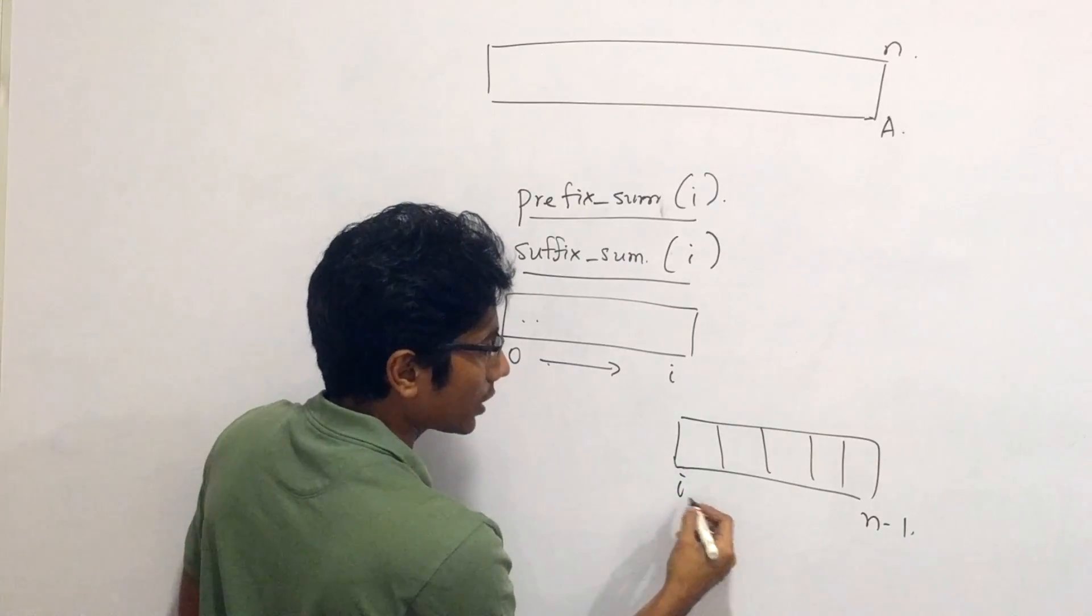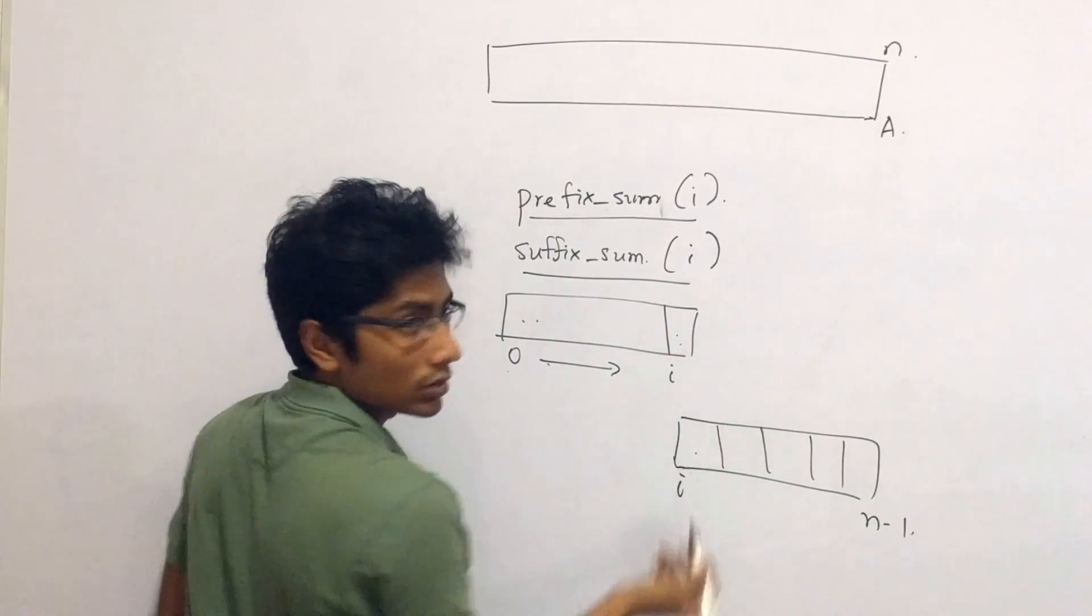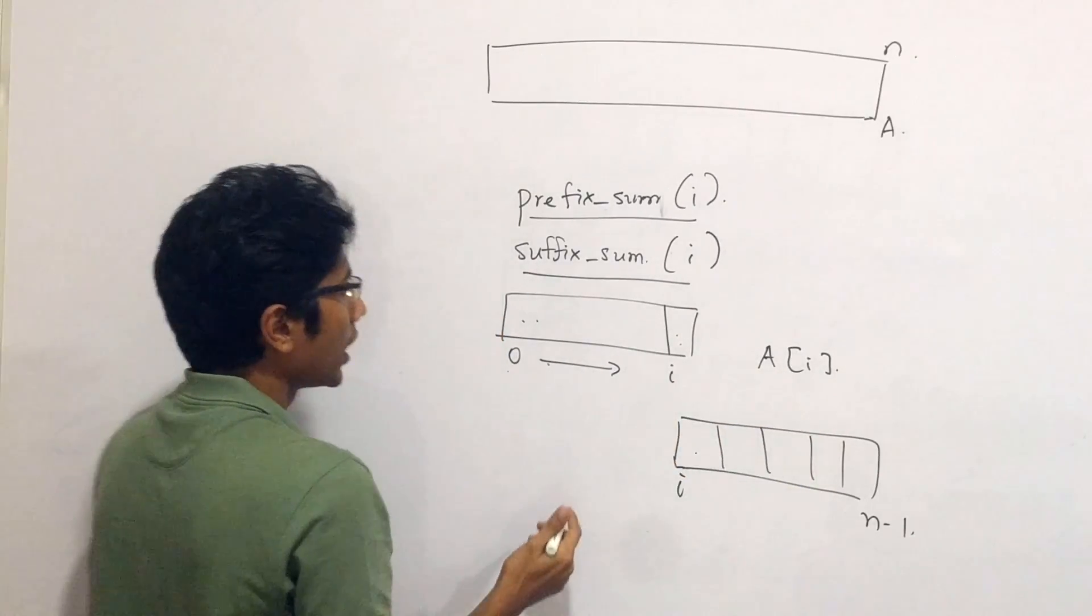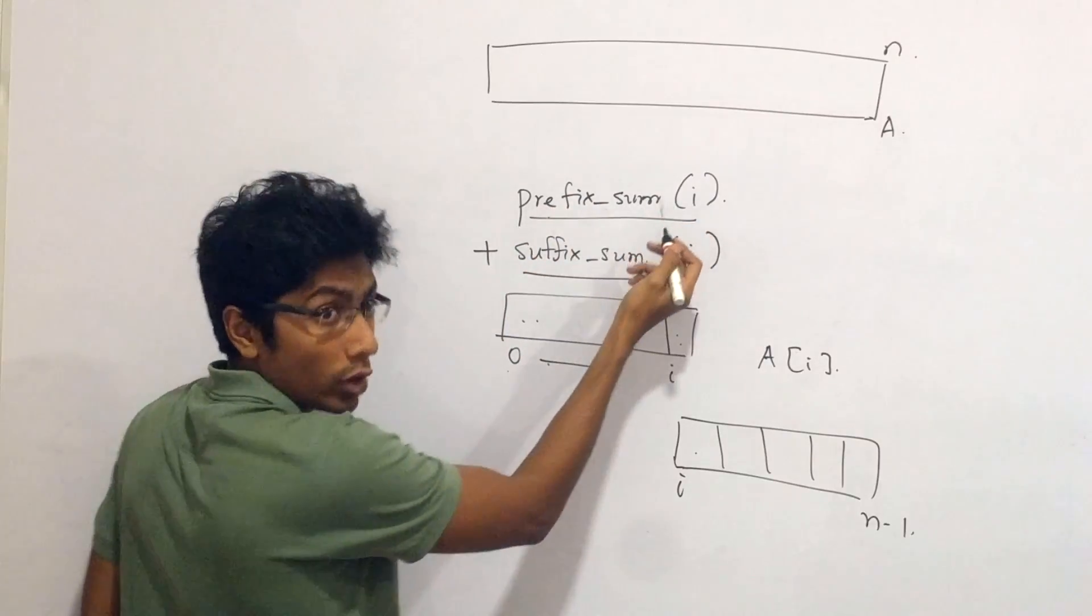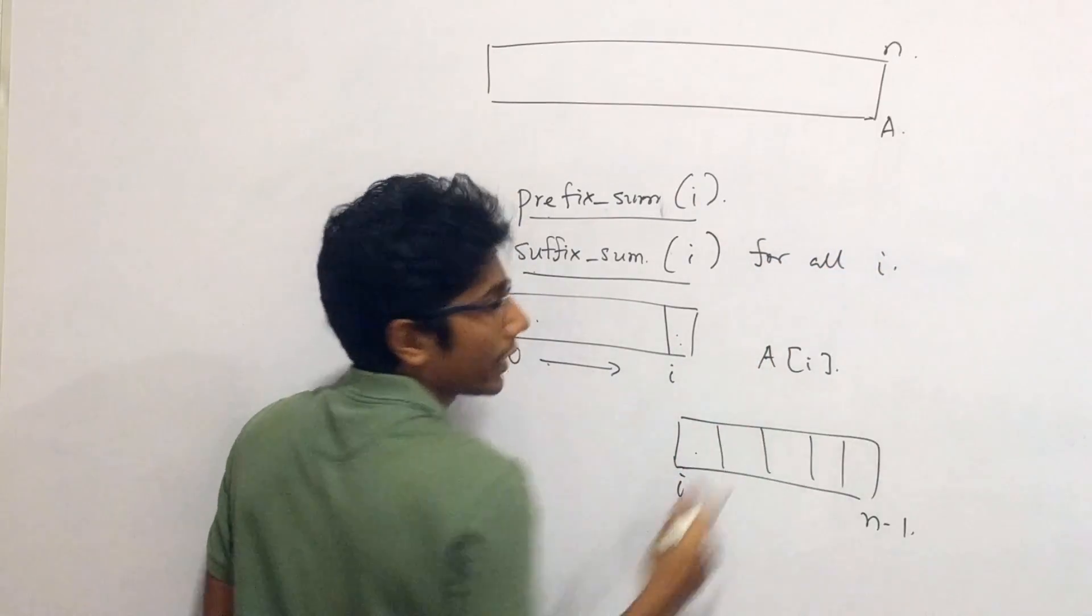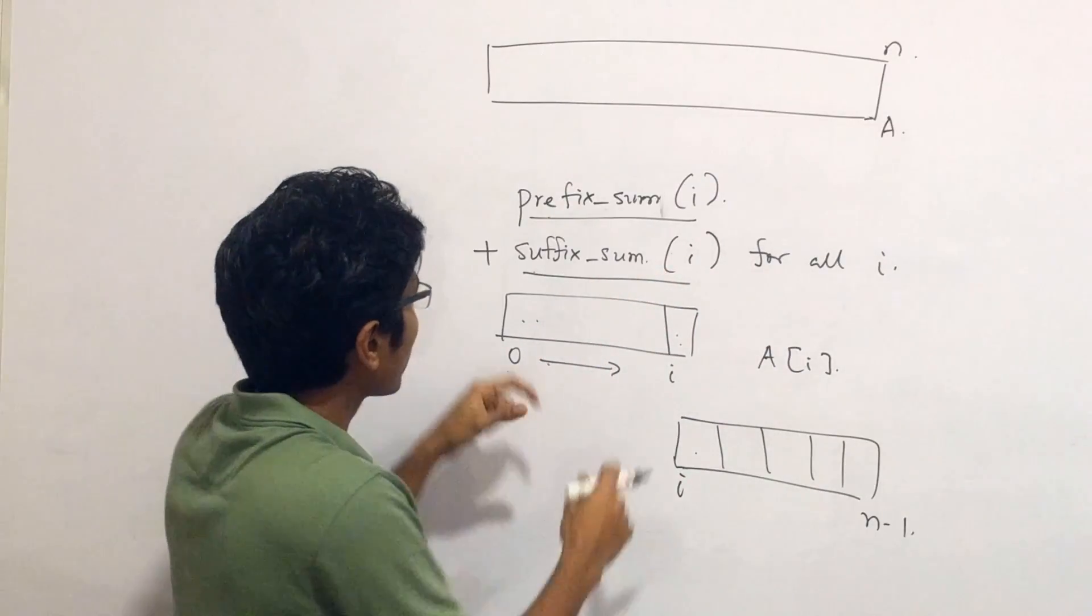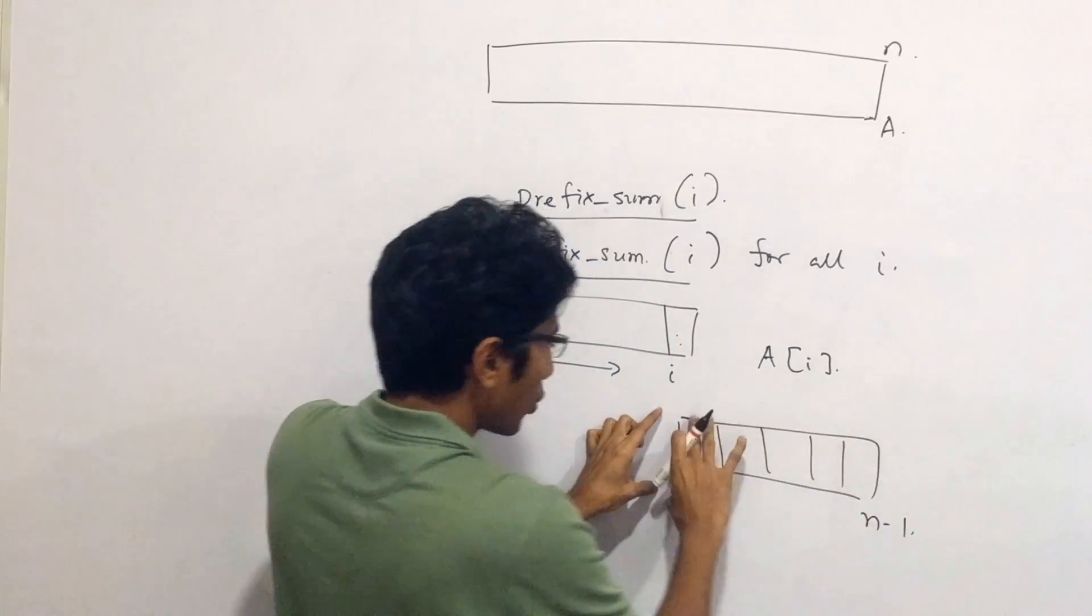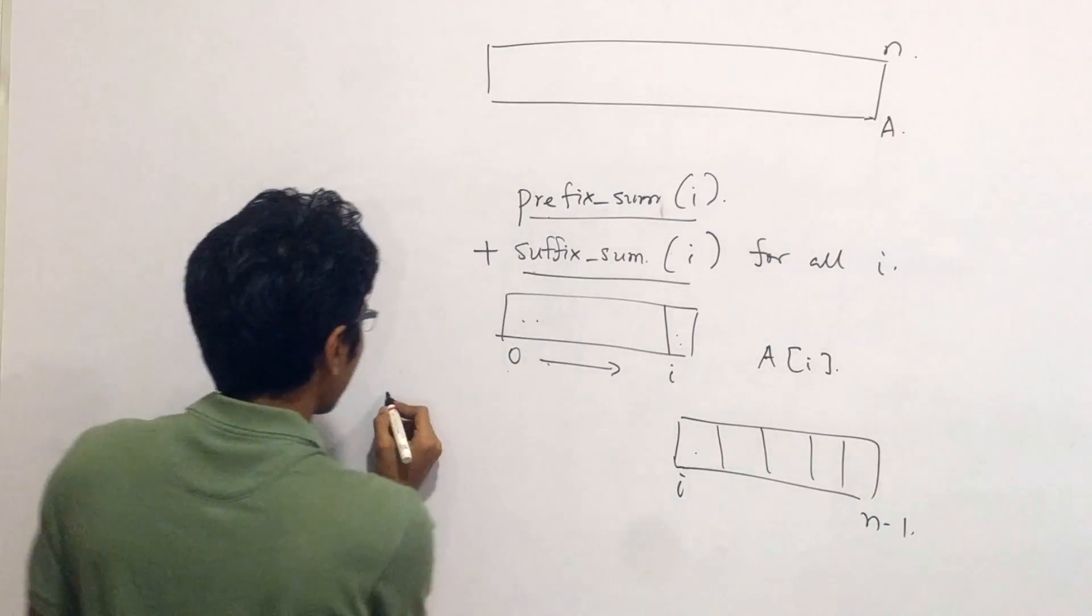So starting from i to n-1, sum of all elements. Now you see here that there is one common element, which is A[i]. A[i] is the common element. What this block of code does is actually sum these two up. Prefix sum up to i and suffix sum up to i for all indexes i. So what you are seeing is that for all indexes i, if you do this, you are essentially doing the sum up to i from 0, the sum up to i from n-1. So basically the whole array, the sum of the entire array is what you have.